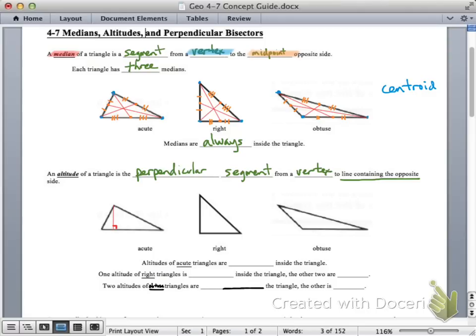For an acute triangle, we end up having three altitudes that all end up being inside the triangle. Altitudes of an acute triangle are always inside the triangle.